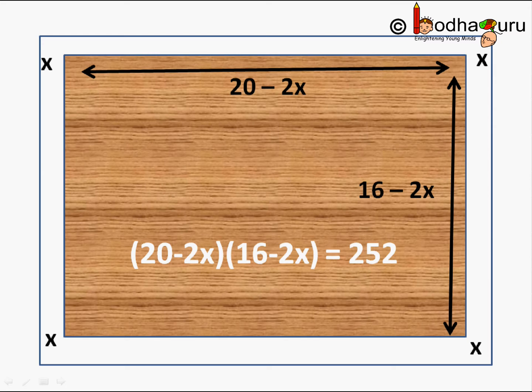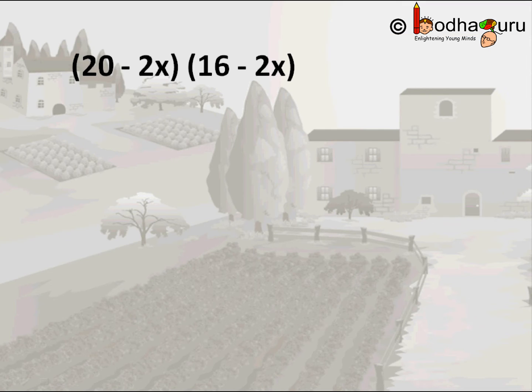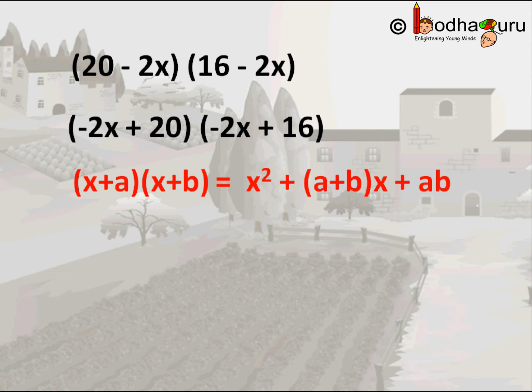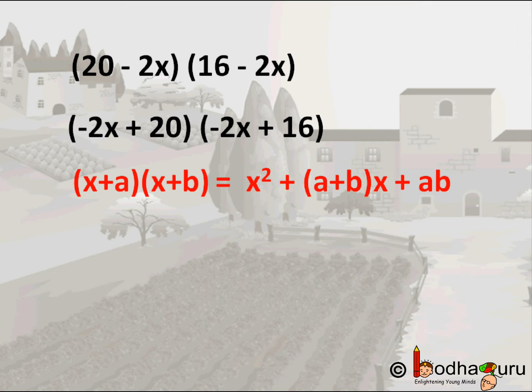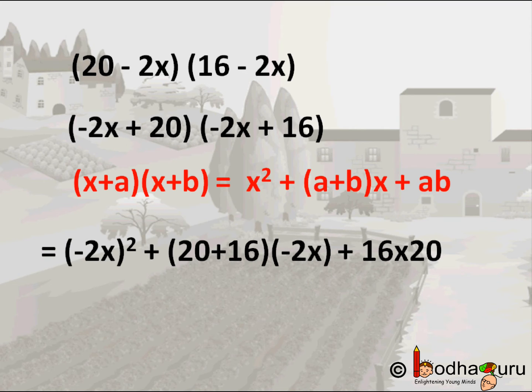Let's find out. How do we solve it? First we write it in descending order of degree: (-2x+20)(-2x+16). This looks similar to an algebraic identity we already know: (x+a)(x+b) = x² + (a+b)x + ab. We compare (x+a)(x+b) with (-2x+20)(-2x+16). So here we have -2x instead of x, a is 20 and b is 16. Replacing these values in the algebraic identity we get (-2x)² + (20+16)(-2x) + (16)(20). So we replace x, a, and b with the values we have.